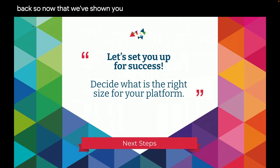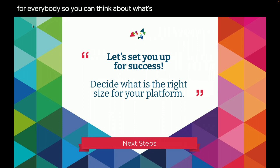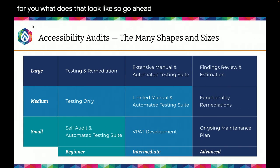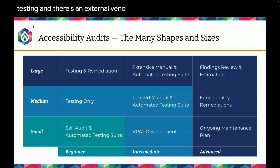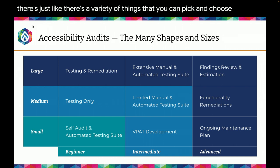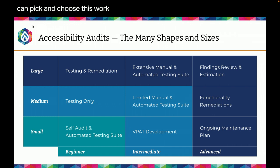Now that we've shown you some samples of what you can do and how you can test, since we have a number of engineers here, I want to recap so you can think about what's the right size audit for you. Revisiting the accessibility grid — is it small, medium, or large? Are you doing full testing and remediation, or just testing while somebody else does the work? It could be that you're doing your own testing and an external vendor does the remediation, or vice versa. You can pick and choose — this grid works for us, but you can also reinvent the wheel and do something more suited to your organization.